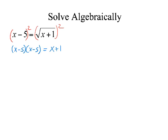Now, to solve this, I have to simplify the left side before I go any farther. And to simplify the left side, I'm going to use foil. And when I multiply that out, I get x squared minus 5x minus 5x plus 25. And I still have the x plus 1 over here.